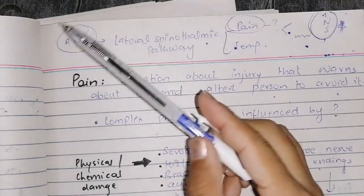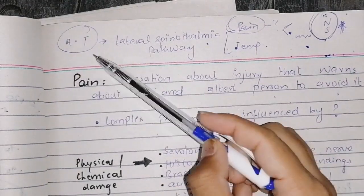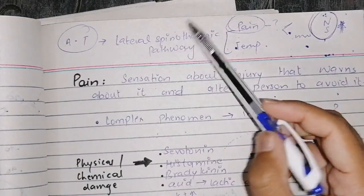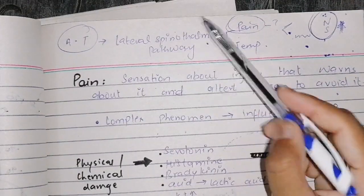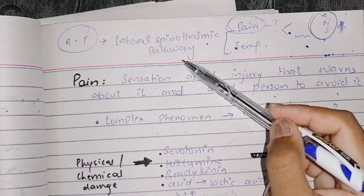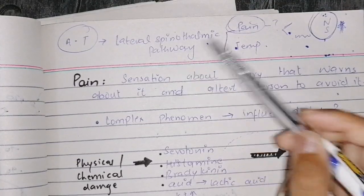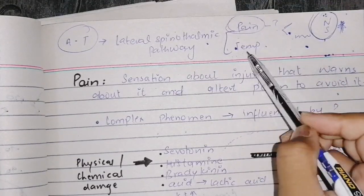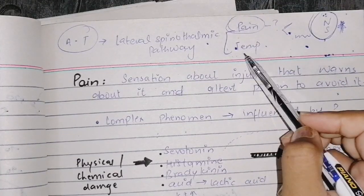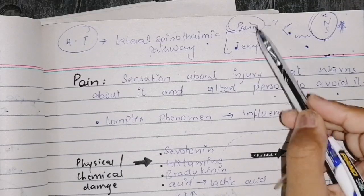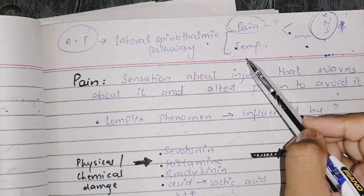Asalaamu alaykum students. In our previous video, we have read the ascending track completely. We have studied the lateral spinothalamic pathway — what is the work of the lateral spinothalamic pathway? These two sensations are brought to our brain: pain and temperature.